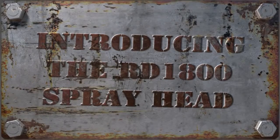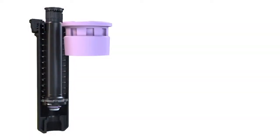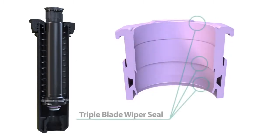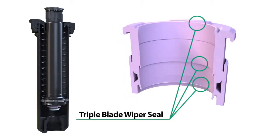The new RainBird RD1800 is no ordinary spray head. The patent-pending triple-blade wiper seal has been precisely engineered to flush debris at pop-up and pop-down.